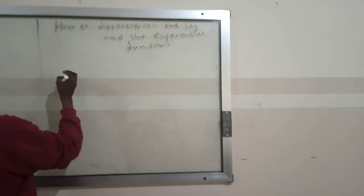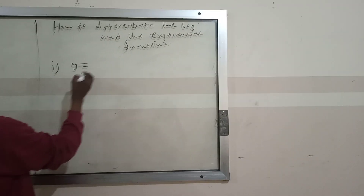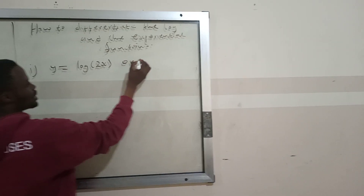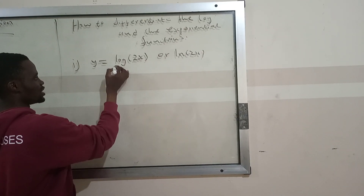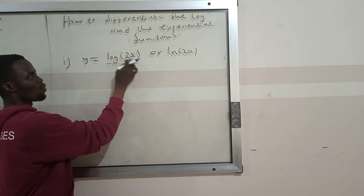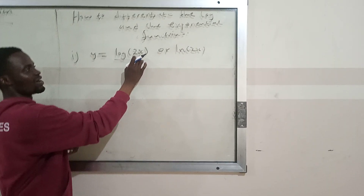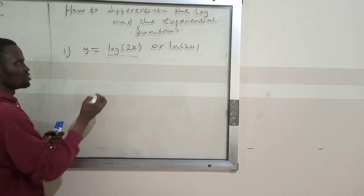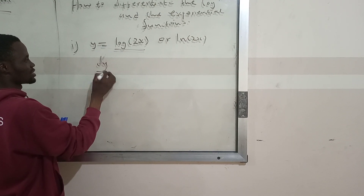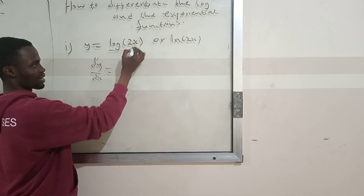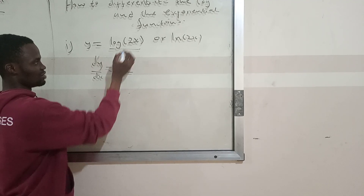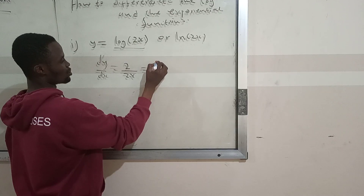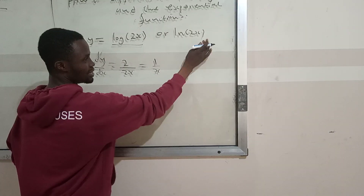It's simple. If you have y equal to ln(2x), the differentiation is straightforward. The idea is you differentiate the one in the bracket — you get 2. Then you divide it by the one in the bracket. So you get 2 divided by 2x, which is equal to 1 over x. And that's your answer.